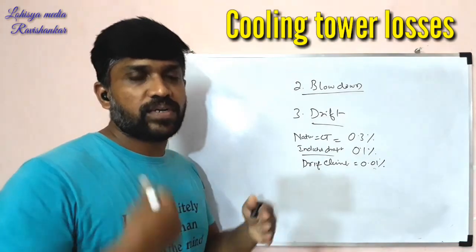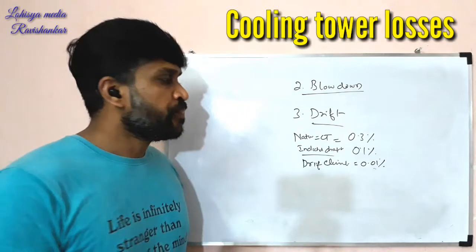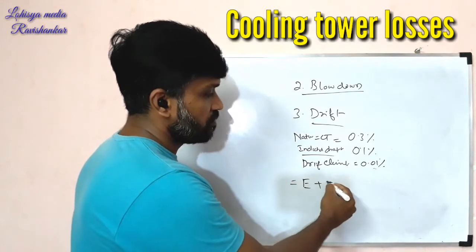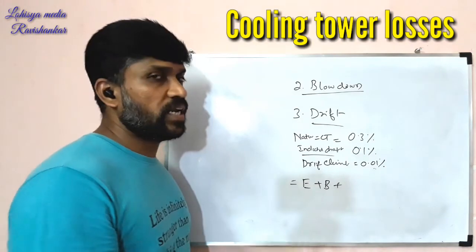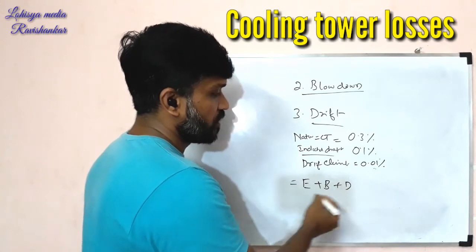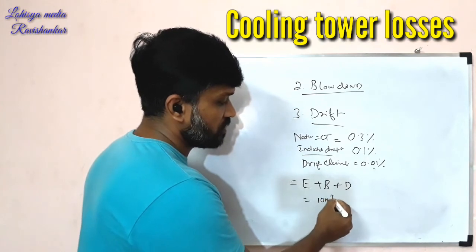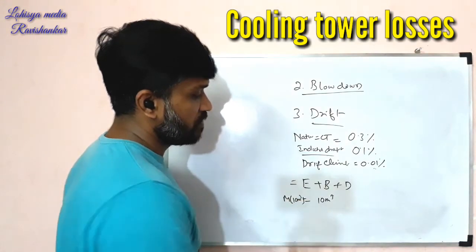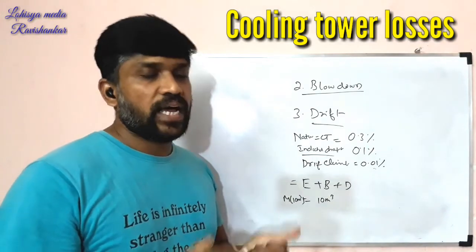For example, if we have a large volume of water — say 100 m³ — the drift carries water droplets out through the air. The water level drops, and if you use the makeup water it can be activated. The makeup water is around 10 meters, which is the same volume of flow — it is a maintenance of water.